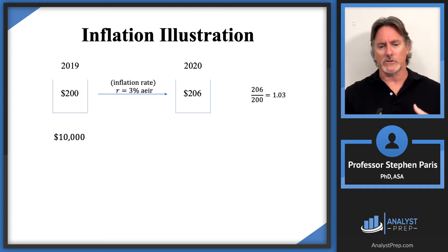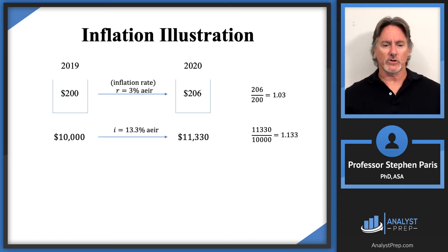In this example, I want to assume the $10,000 accumulates at a pace that outpaces the rate of inflation. Let's say the $10,000 accumulates to $11,330. Since the ratio of those two numbers is 1.133, that implies an annual effective interest rate of 13.3% from 2019 to 2020.